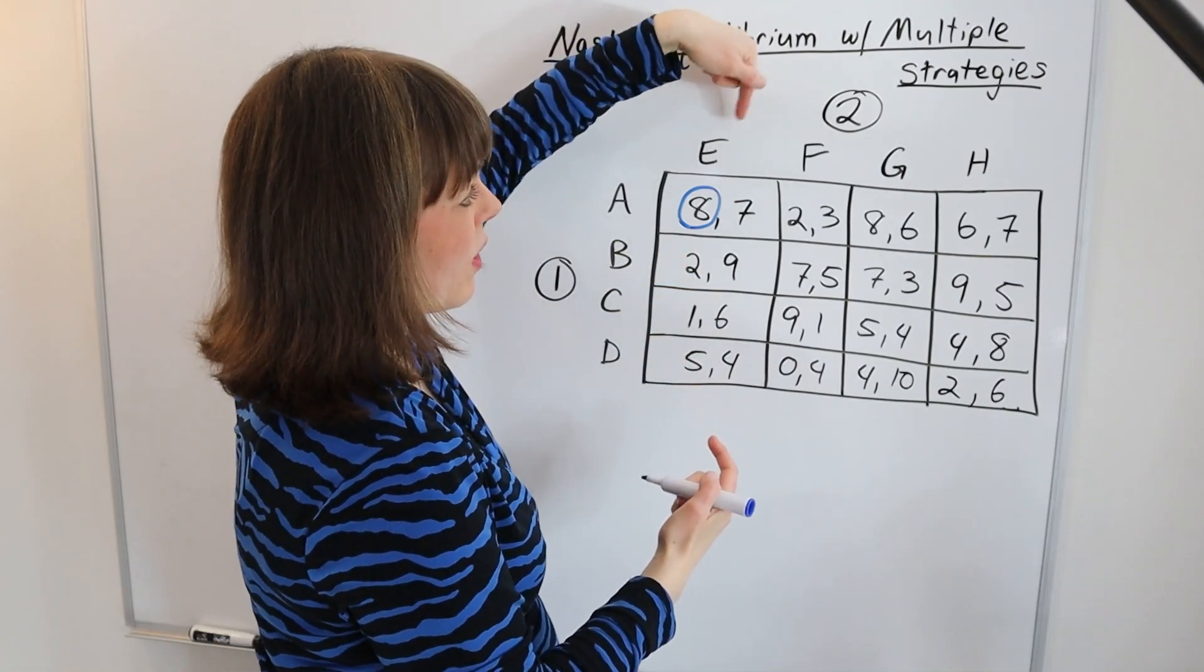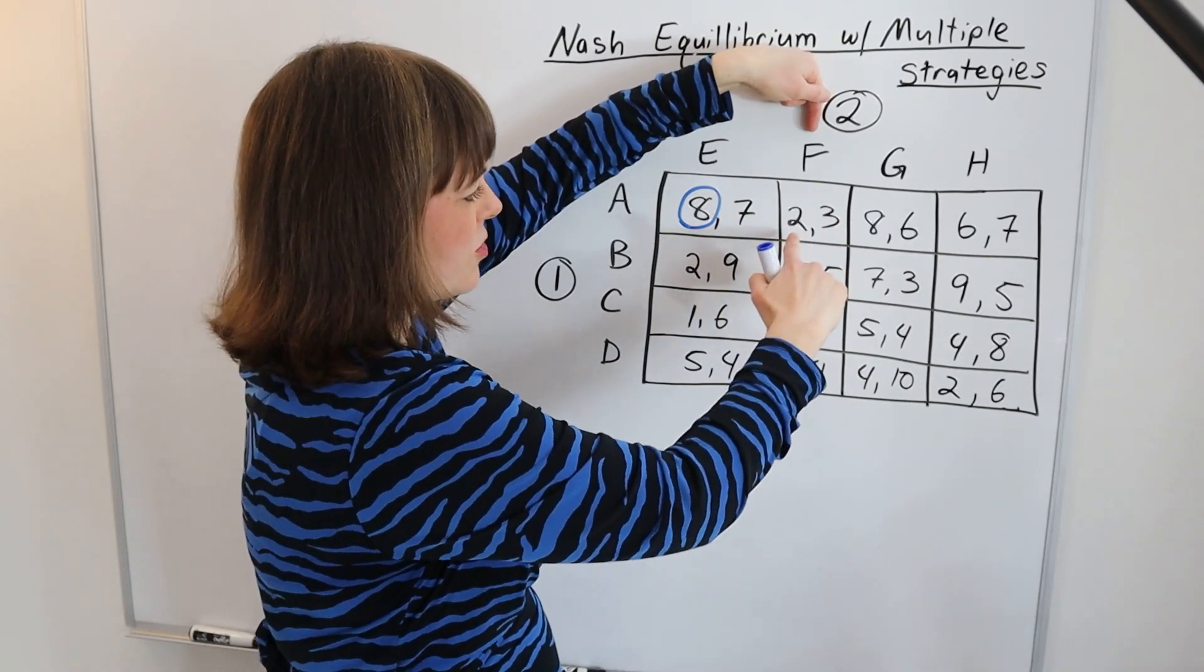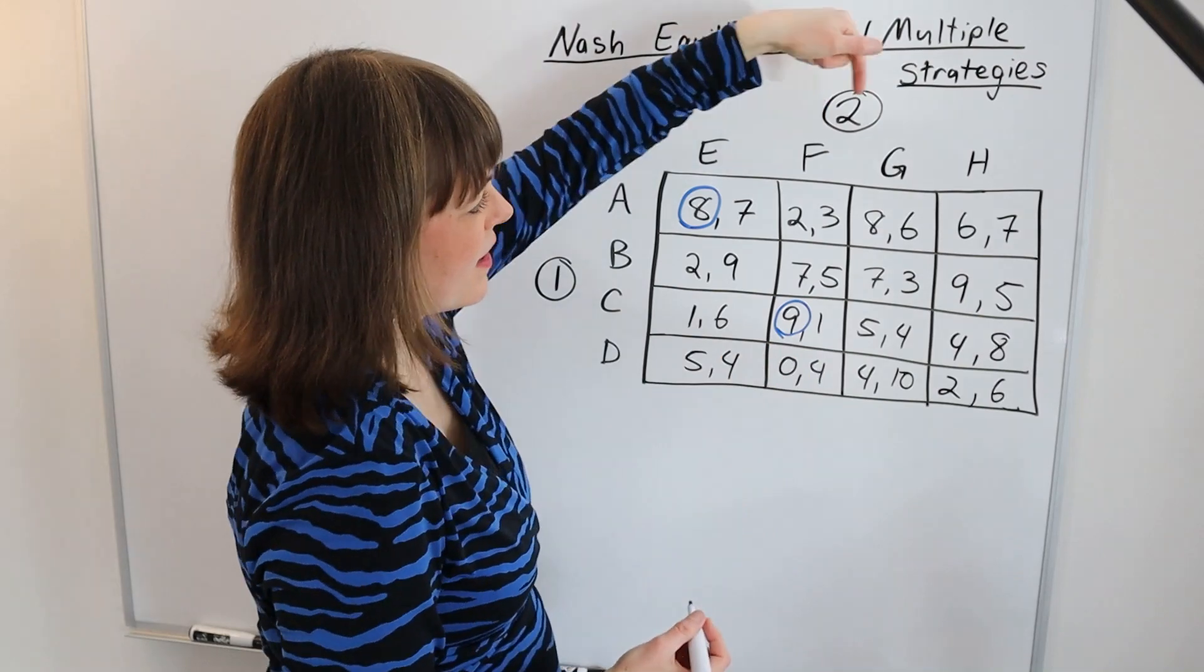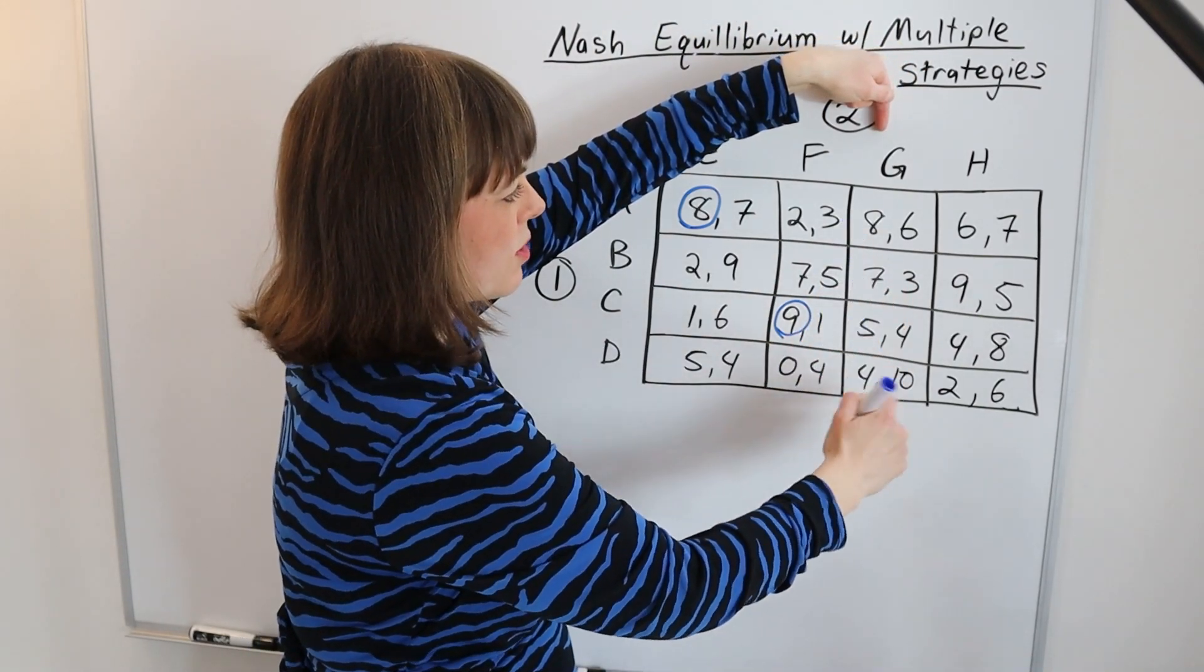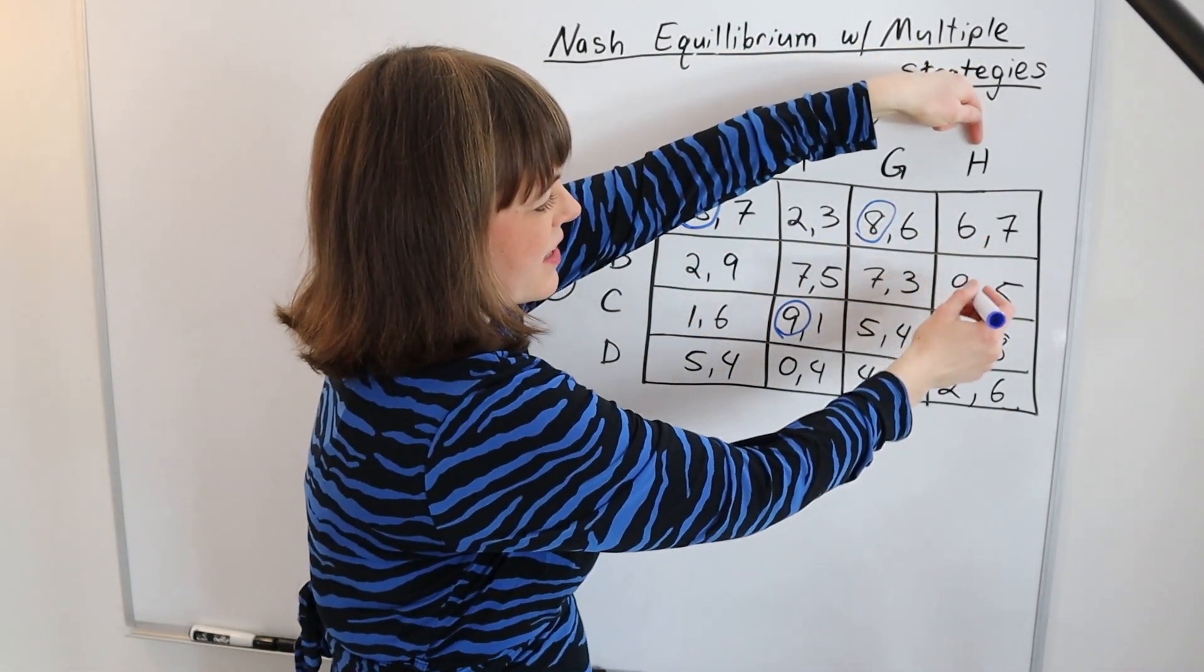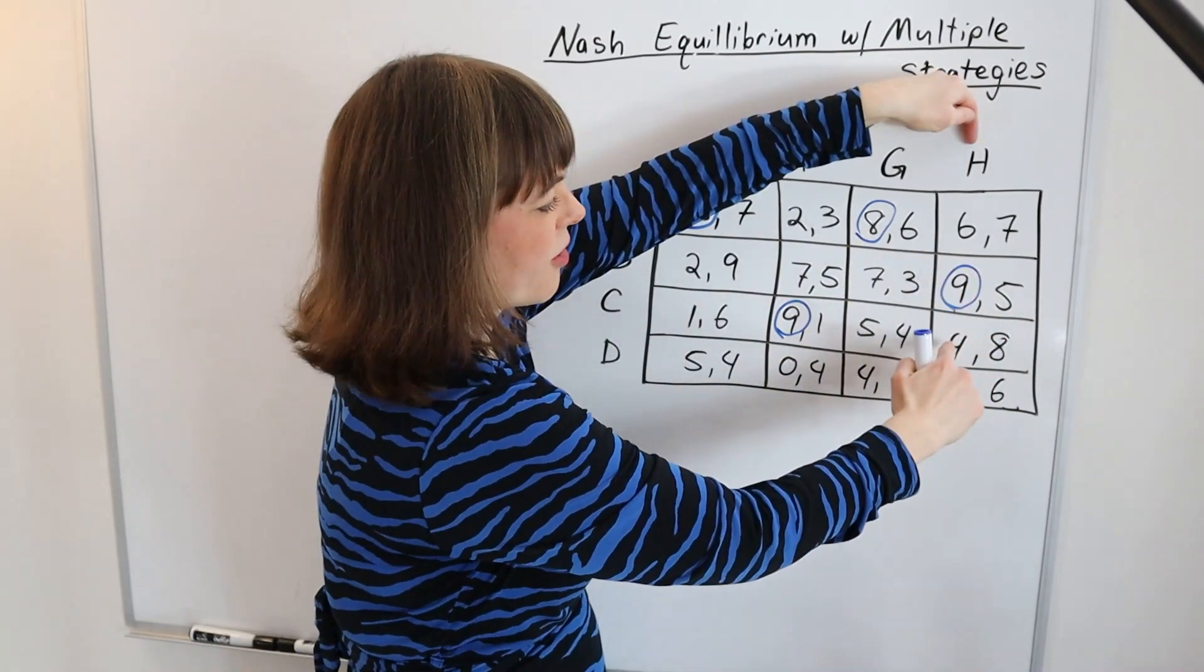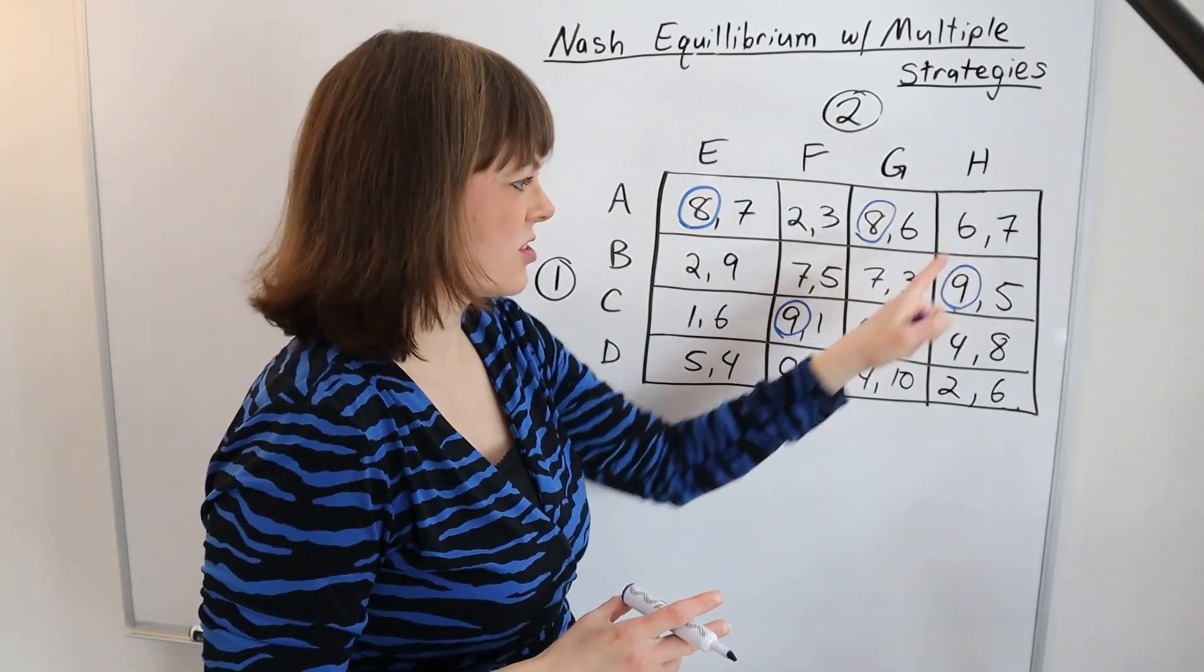Then player one goes to the next strategy for player two and says, if player two goes F, what would I prefer to have done? I would prefer the nine. If player two goes G, then I as player one would prefer to go A. If player two goes H, then I would prefer the nine over any of the other options.